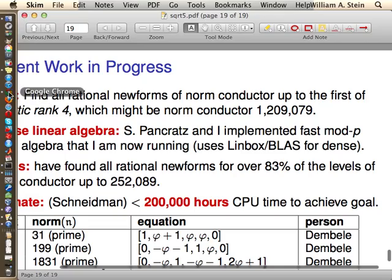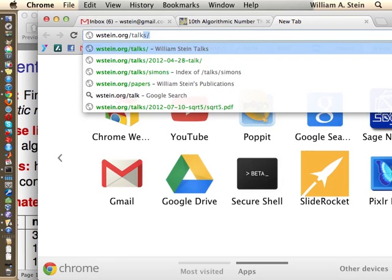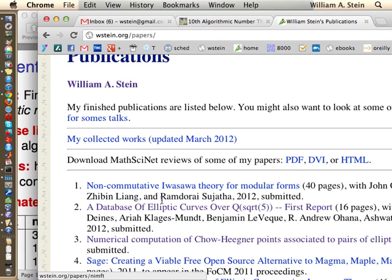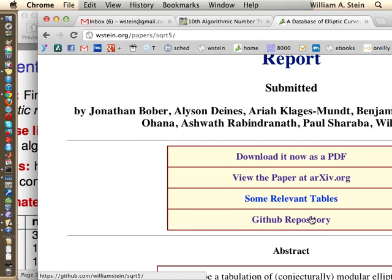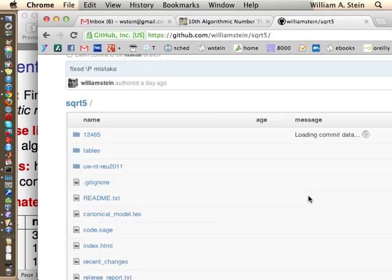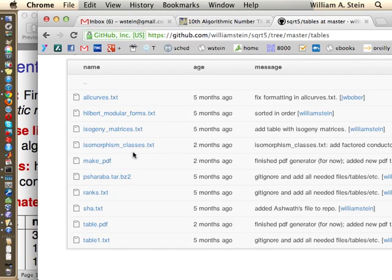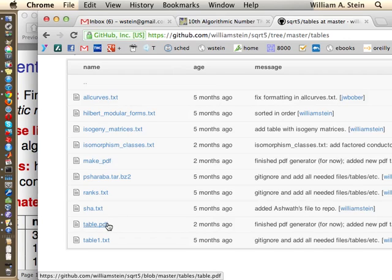So just a few websites of relevance, all easily that you can get from my website, wstein.org slash talks. At the top you have the talk I just gave. Slash papers has papers that I've written, and one of them is this paper. And you can see that there's a GitHub repository. Watch out though. We recently discovered a week or two ago that some of the other files that end in .txt are inconsistent.